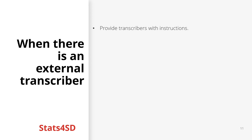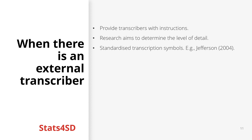It is also important to provide transcribers with instructions related to the purpose of the research and transcription requirements. The research aims will also determine the level of detail needed — for instance, whether to transcribe nonverbal aspects, involuntary vocalisations, details of pauses, and so on. We can choose whether to use standardized transcription symbols — for instance, the one developed by Jefferson can be helpful. This choice is based on our research aims and focus.